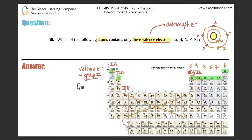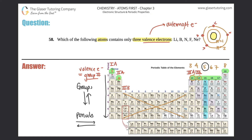Remember, groups go up and down, and periods go across. Going down group 1, atoms like hydrogen, lithium, sodium, potassium, etc., all have only one valence electron. Looking at group 15 or 5A, nitrogen, phosphorus, arsenic, etc., those have five valence electrons. So the pattern runs: 1, 2, 3, 4, 5, 6, 7, 8 total valence electrons.